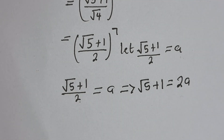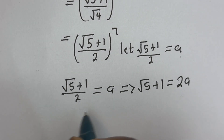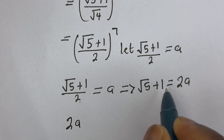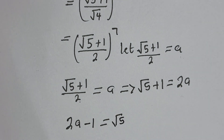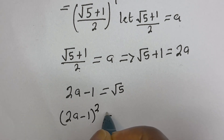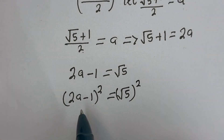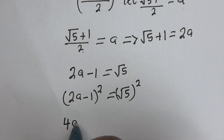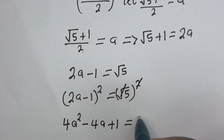Let's square both sides of this equation. Taking the 1 to the other side gives 2a minus 1 equals square root of 5. Squaring both sides: (2a − 1)² = (√5)², which expands to 4a² minus 4a plus 1 equals 5.